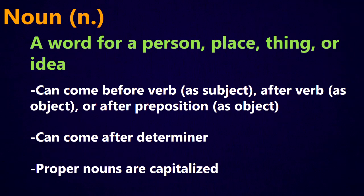In a sentence, nouns can come before a verb as the subject, after a verb as the object, or after a preposition as the object of the preposition. Nouns can also come after a determiner, although a noun doesn't always need a determiner. Proper nouns are capitalized, so if you see a word in a sentence that's not the first word and it's capitalized, then it's a proper noun — an easy way to identify a noun.